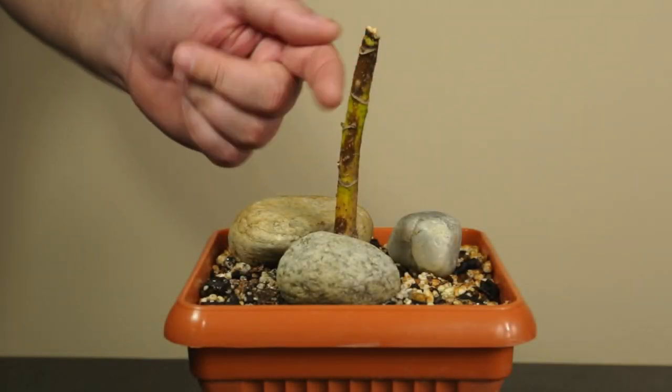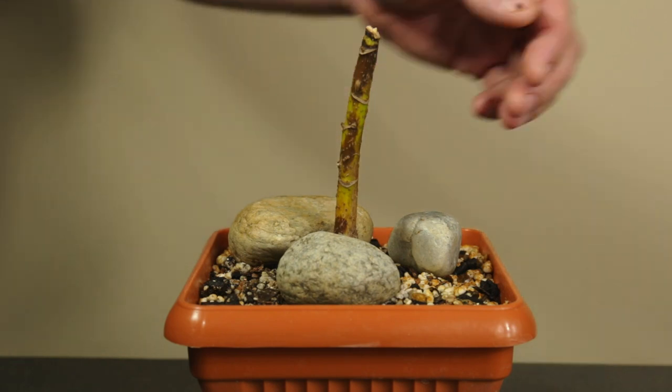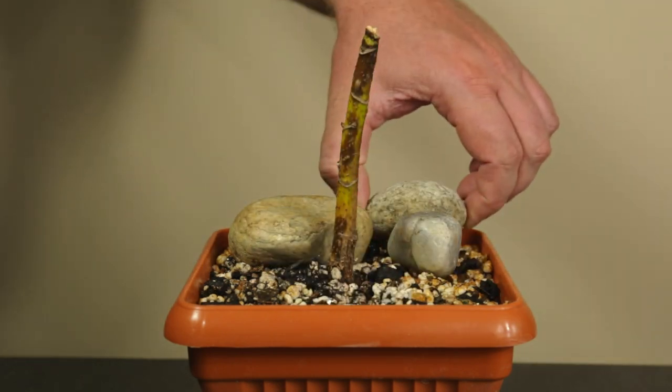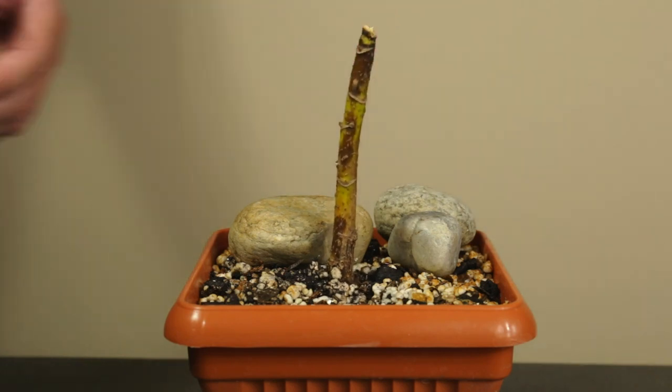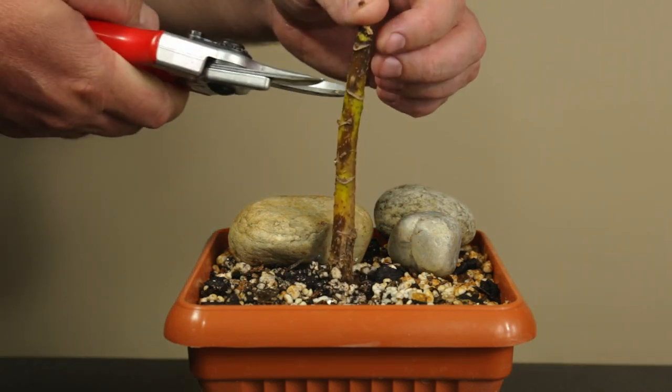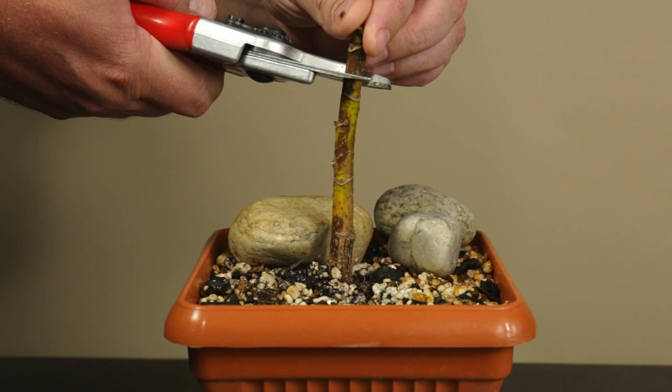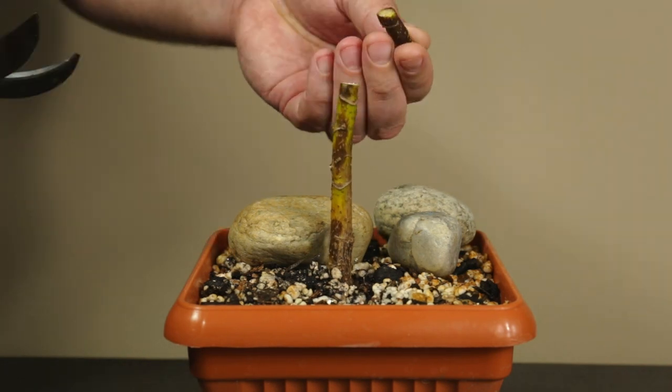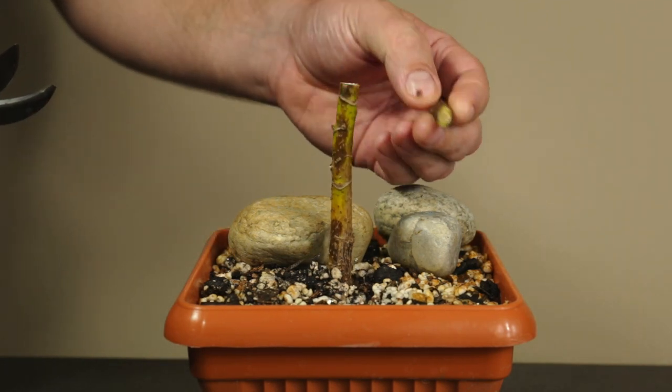One month later, things didn't look too promising for the short Schefflera stump, which seemed to be dying. It was even more unstable in the pot than just after potting. So I cut off a piece to see how it looked on the inside, and it was pretty clear that it was too far gone to be saved.